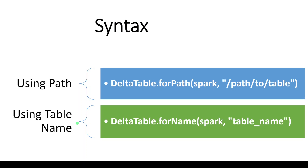Coming to syntax: in order to create a table instance there are two different syntaxes — either we can use path or we can use table name. Using path, the syntax starts with DeltaTable.forPath, then the keyword spark, then the path where we have created the Delta table. The second syntax uses the table name: DeltaTable.forName, then the keyword spark, then the table name.